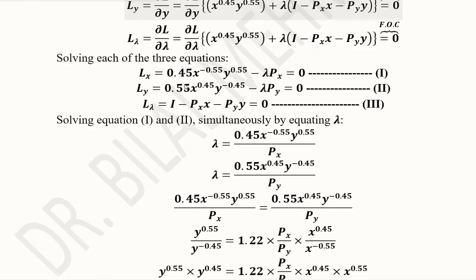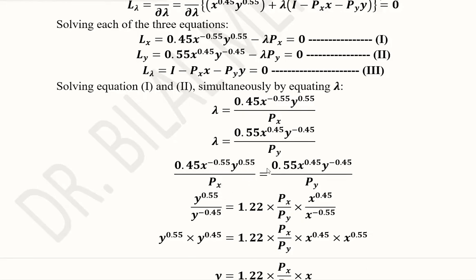The first two equations are similar. I can use them by extracting the value of lambda from each, which allows me to get rid of lambda. The resultant equation can then be solved with the third equation, which does not have lambda and has only PX and PY, making it straightforward to solve once we have an equation with PX and PY only. We equate both expressions since both equal lambda.